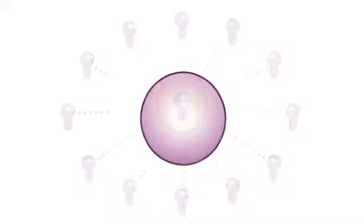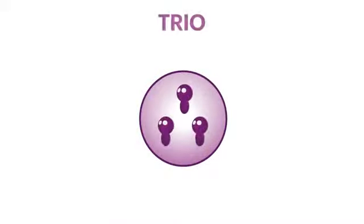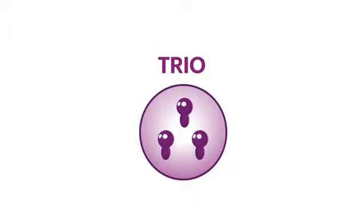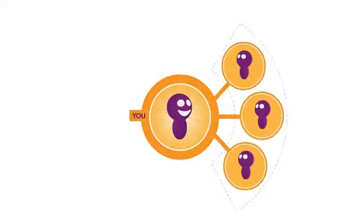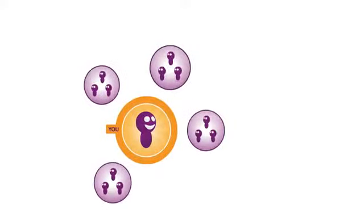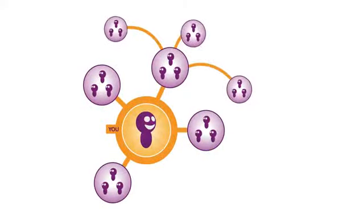So how does the plan work? It's all built around one basic idea called a Trio. A Trio is created when you or someone in your network signs up three Solovey mobile service members. Trios contribute to your monthly earnings in a number of ways.